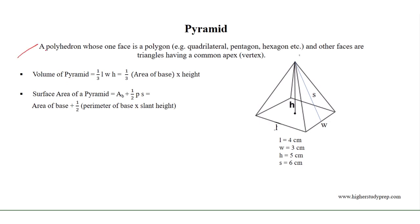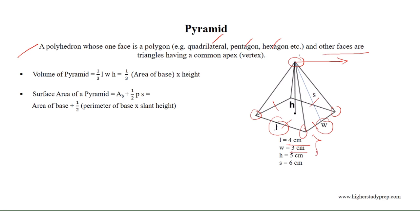A pyramid is a polyhedron whose one face is a polygon — for example a quadrilateral, pentagon, hexagon, and so on — and whose other faces are triangles having a common apex or vertex. For this pyramid, the base is a rectangle whose length is equal to 4 centimetres and width is equal to 3 centimetres. Therefore the area of the base is equal to 4 times 3, which equals 12 square centimetres.